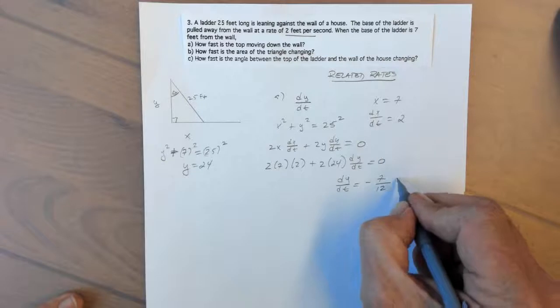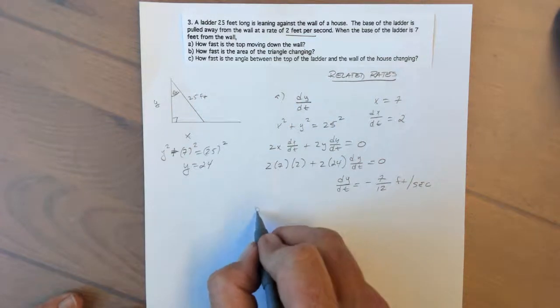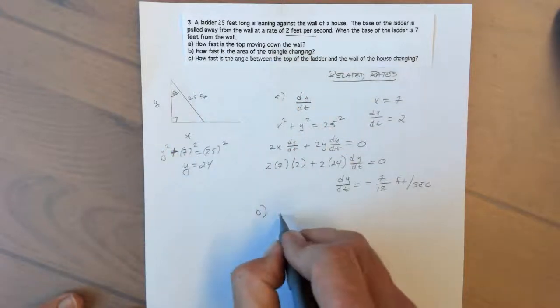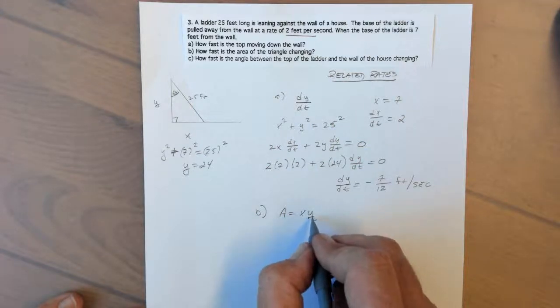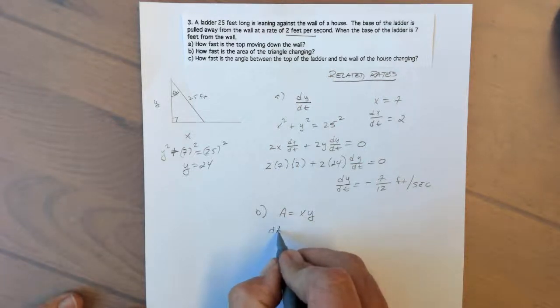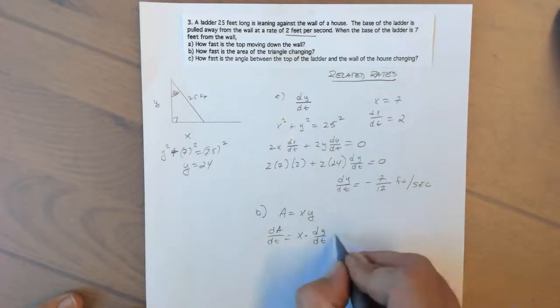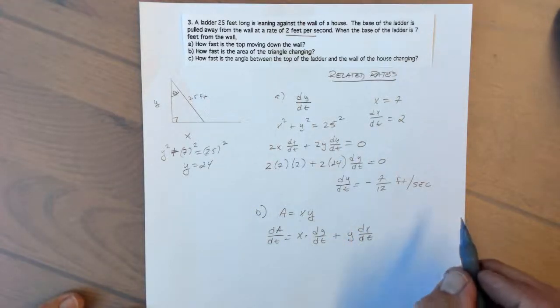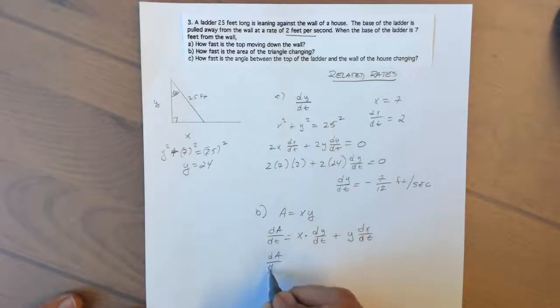Part B asks us for the rate or how fast the area is changing. So the area is the product of x and y, and again it's not written as a function of t, so we'll have to do implicit differentiation as well as product rule. So dA/dt equals x times the derivative of y with respect to time plus y times the derivative of x with respect to time.